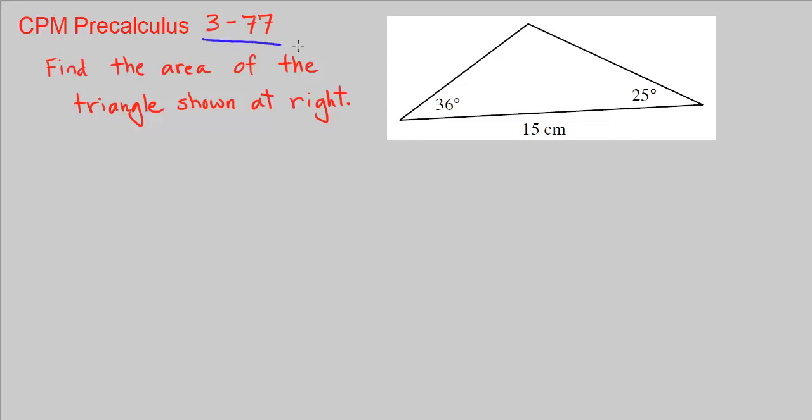This is CPM Precalculus Chapter 3 Number 77. We are asked to find the area of the triangle shown at right.